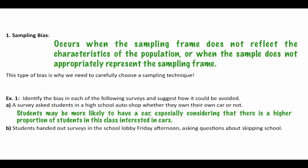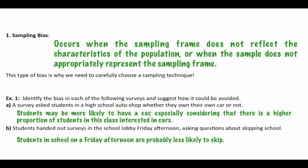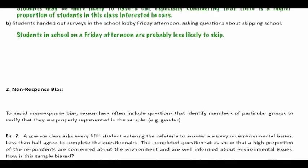What if we handed out surveys in the school lobby on Friday afternoon asking questions about skipping school? The biggest problem is that if you're there on Friday afternoon, you are probably a person who is less likely to skip. So your feelings about skipping and the frequency with which you skip are probably different. The people in the building — your sampling frame — is not representative of your population, because at that time of day and that time of the week, anybody who would like to skip may be more likely to be out skipping. So we can't extrapolate to the whole population since our sampling frame is so biased.